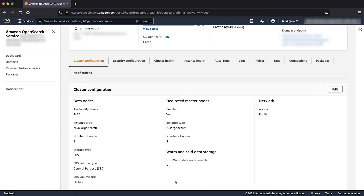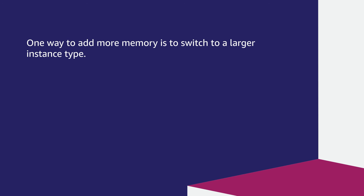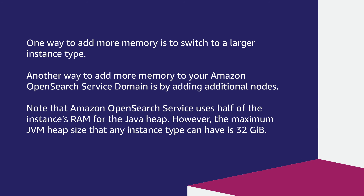If you are facing memory issues such as high JVM memory pressure in your Amazon OpenSearch service domain, scale up by adding more memory. One way is to switch to a larger instance type, and another way is to add additional nodes, both as demonstrated previously. Note that Amazon OpenSearch service uses half of the instance's RAM for the Java heap; however, the maximum JVM heap size that any instance type can have is 32 GB.